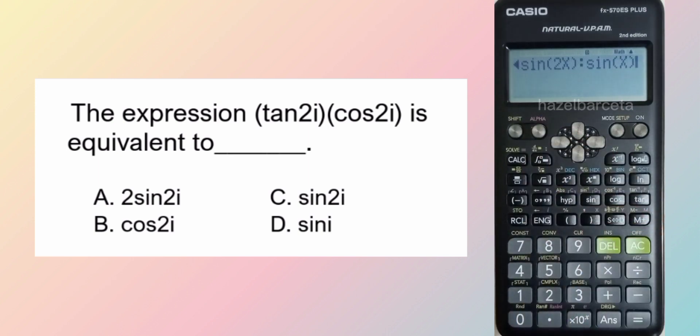Next, ang question po ay kung ano daw pong ang equivalent ng tangent 2i times cosine 2y. So, ibig sabihin kung alin po yung parehong sagot ng tangent 2y times cosine 2y from the options ang ating magiging